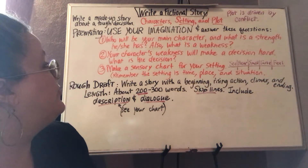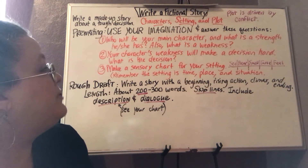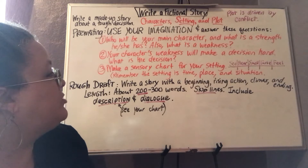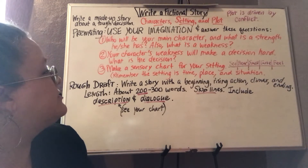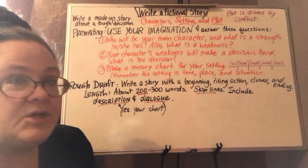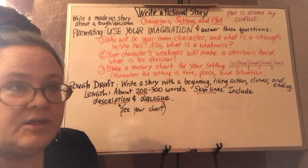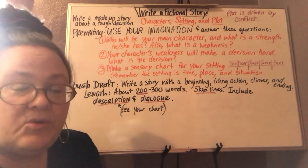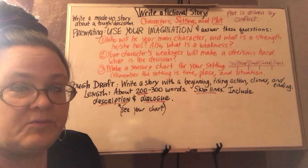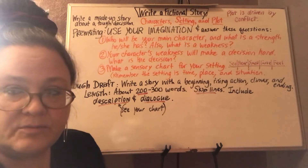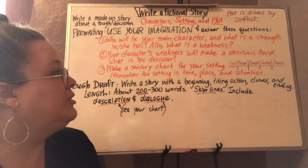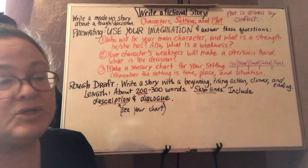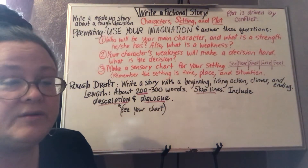The pre-writing is going to be this: use your imagination and answer these questions. Number one, who will be your main character and what is a strength he or she has? Also, what is a weakness? In the example I'm going to attach, the main character is a seventh-grade girl and she's friendly — that's a strength. But a weakness she has is that she can be a little shy or hesitant to talk to people she doesn't know super well. That's the kind of thing you're supposed to write for number one. It doesn't have to be super long, just something like that.